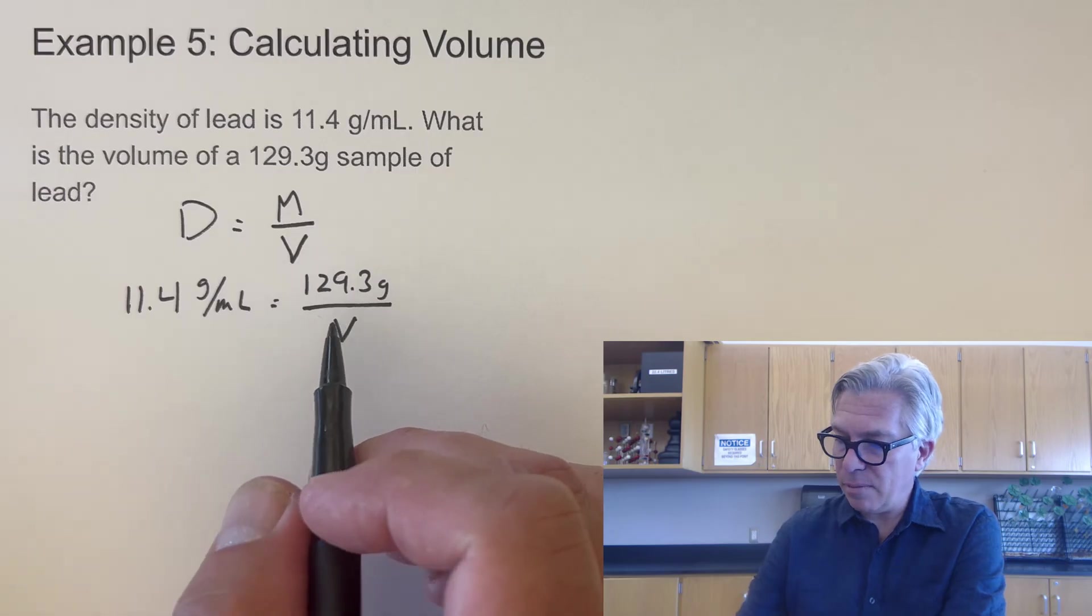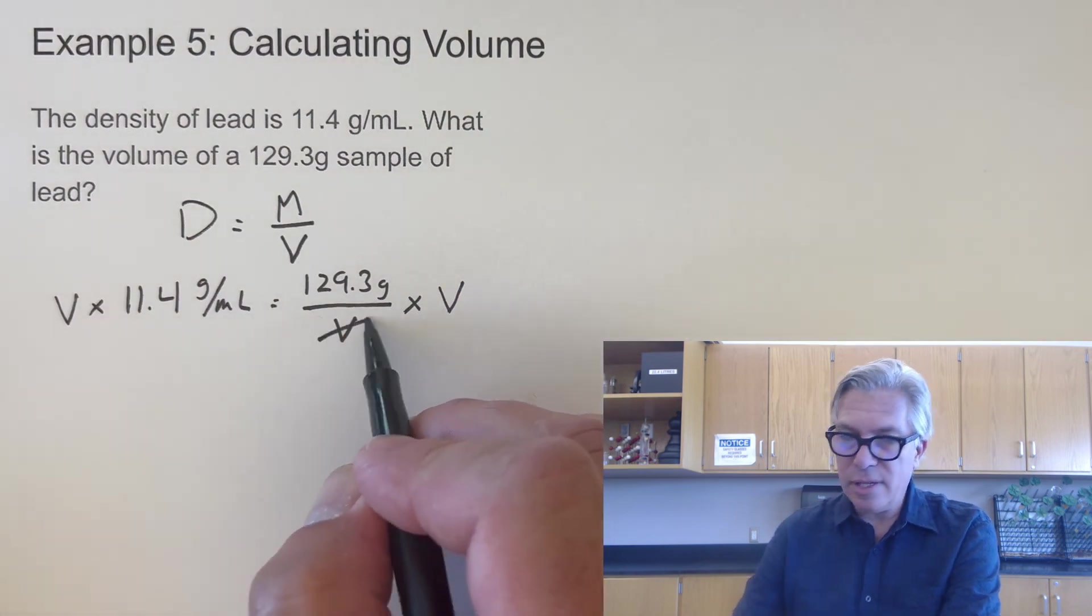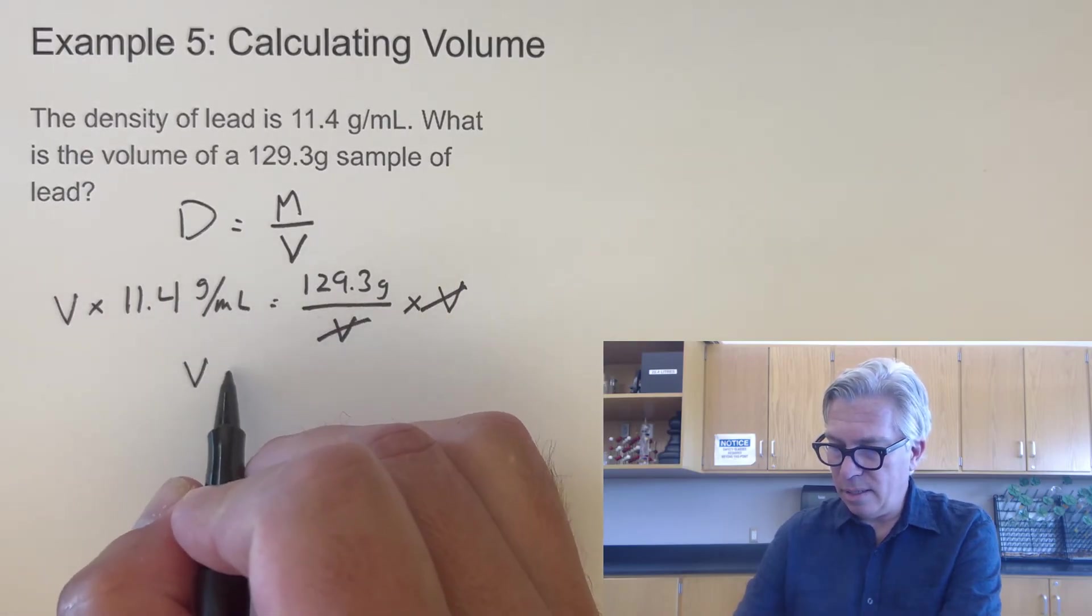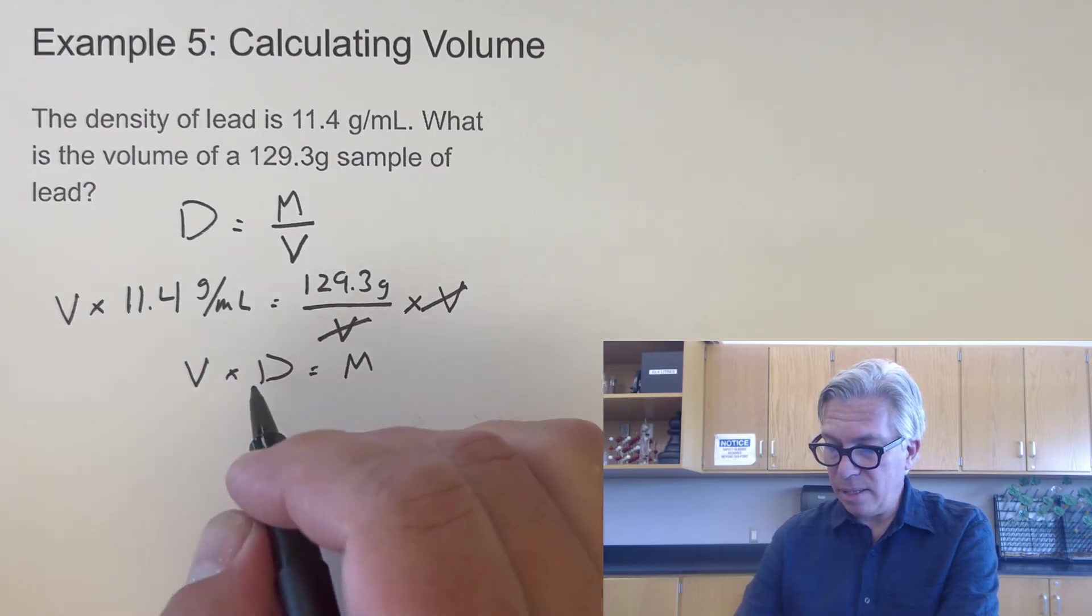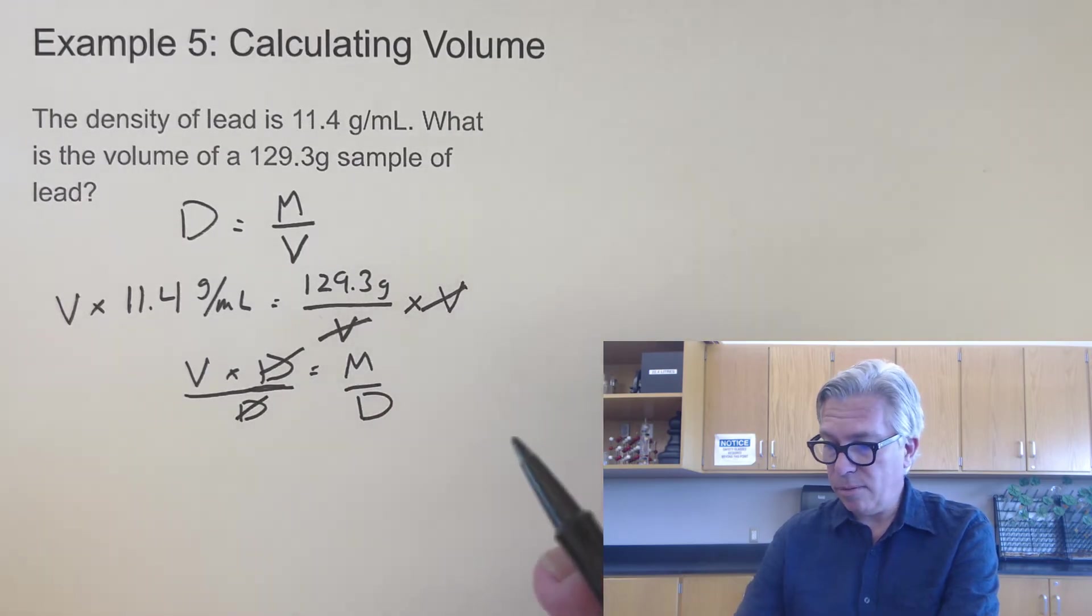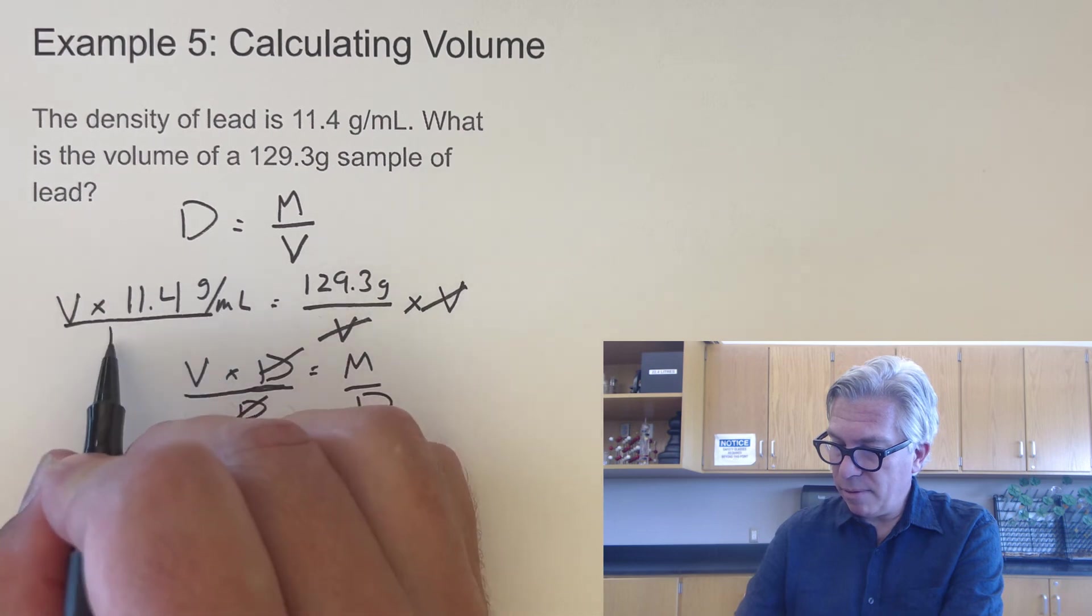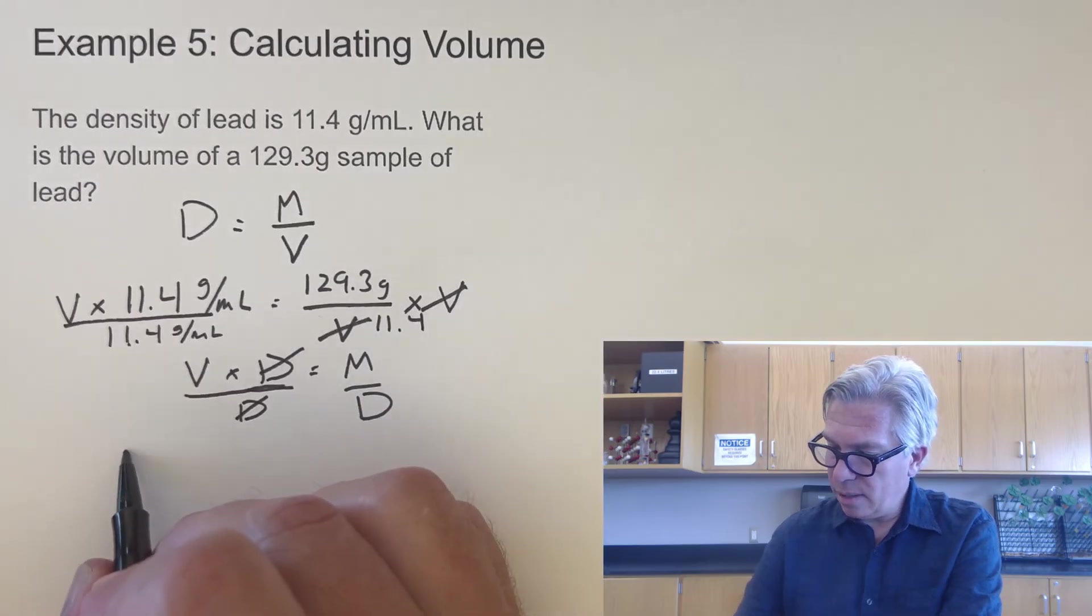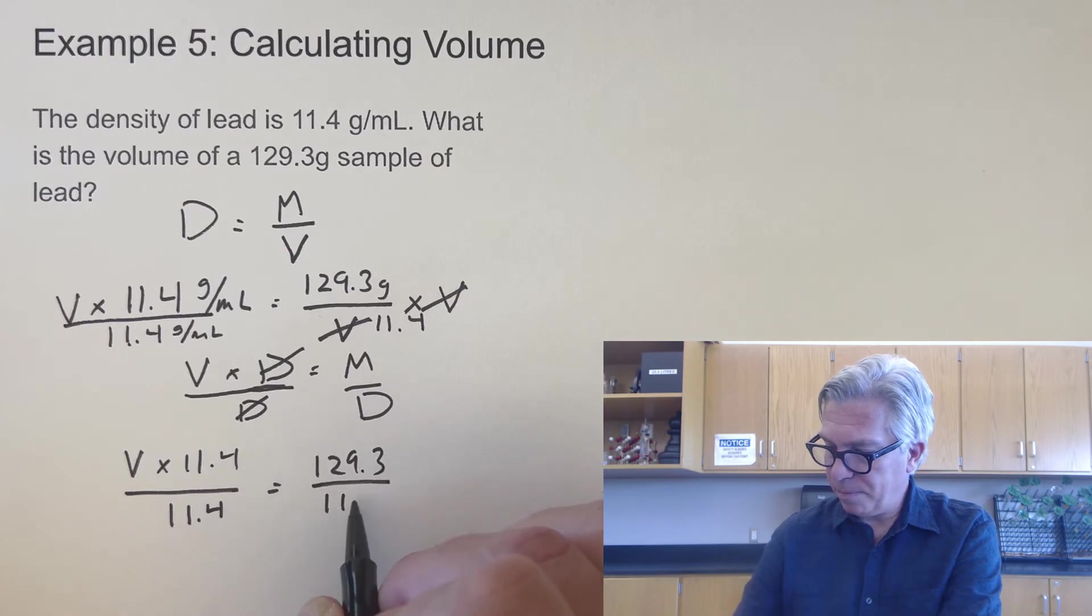We have to get the V by itself and also the V not on the bottom of a fraction. Okay. So we're going to do something similar to the previous example. We're going to take and multiply both sides by V so it's not on the bottom anymore. And what that does is it cancels the V on that side. And now we have V times the density equals the mass. So it's almost like V times the density equals mass. Okay. But then we need to get V by itself. And so what we need to do then is divide both sides by D. And that cancels the D on that side. So I'm just showing the algebra with the formula. So what I want to do is actually take the V times 11.4 and divide by 11.4 grams per milliliter on that side and then divide by 11.4 on this side. So I'm just going to rewrite that V times 11.4 over 11.4 equals 129.3 divided by 11.4.